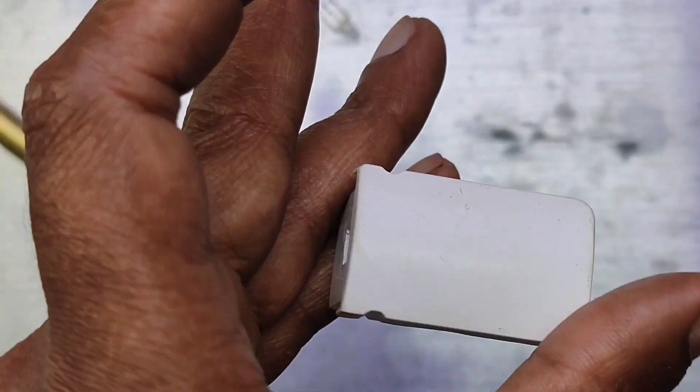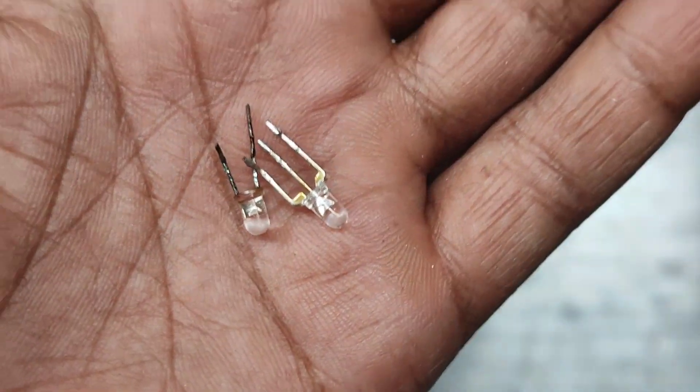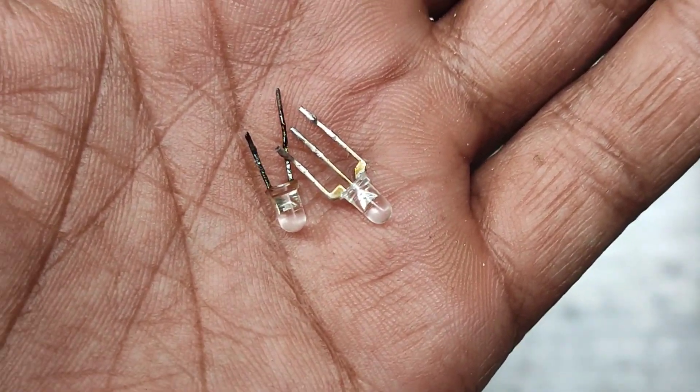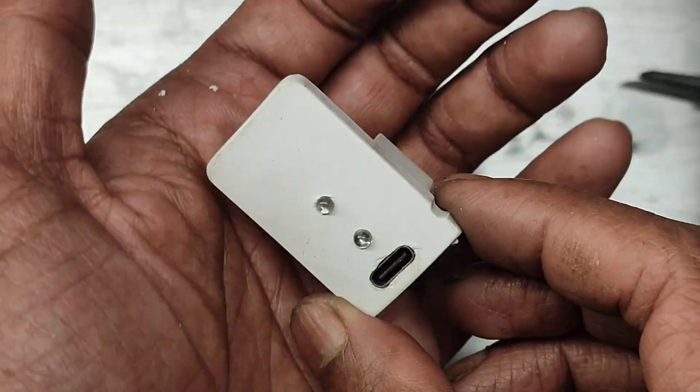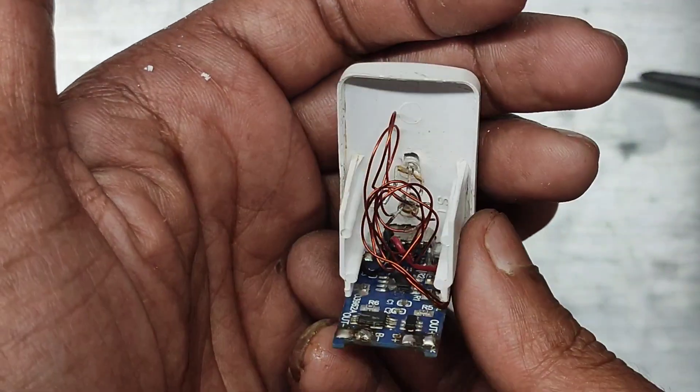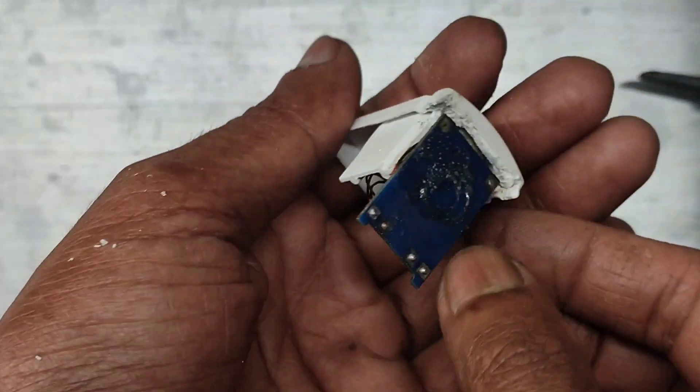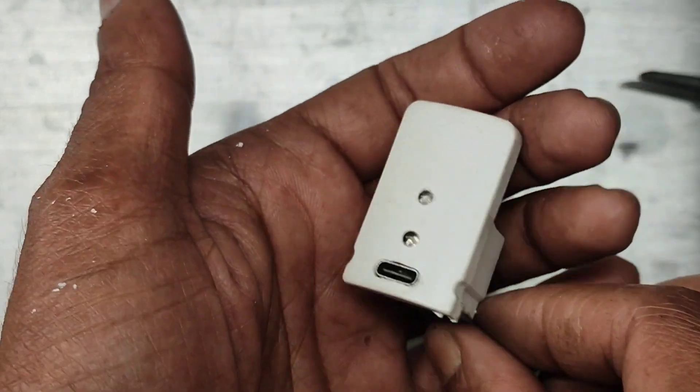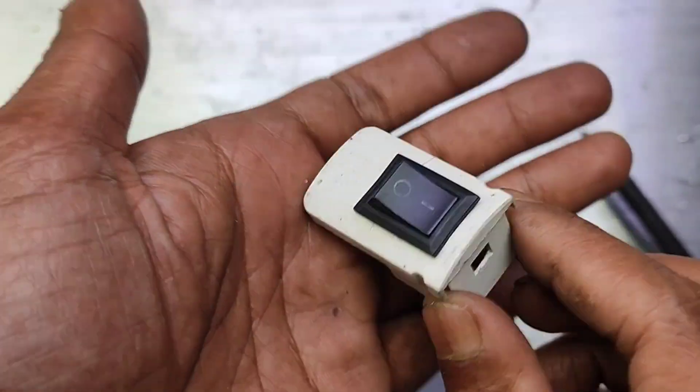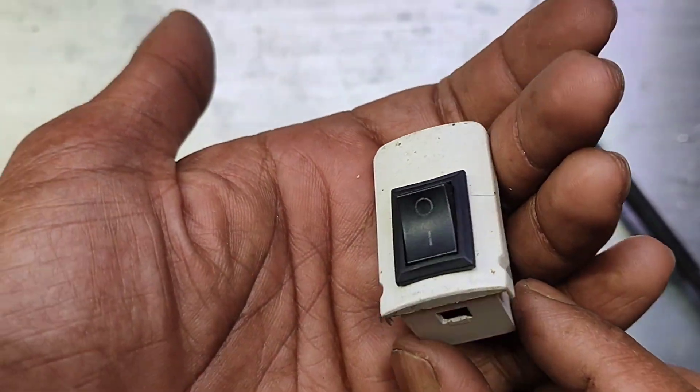I'll make holes for the charging connector and charging status indicators. I'm going to replace the module's charging status LEDs with these two. Here you can see the module and the red and green LEDs neatly attached. I made a hole and added an SPST switch to the cover on the other side.